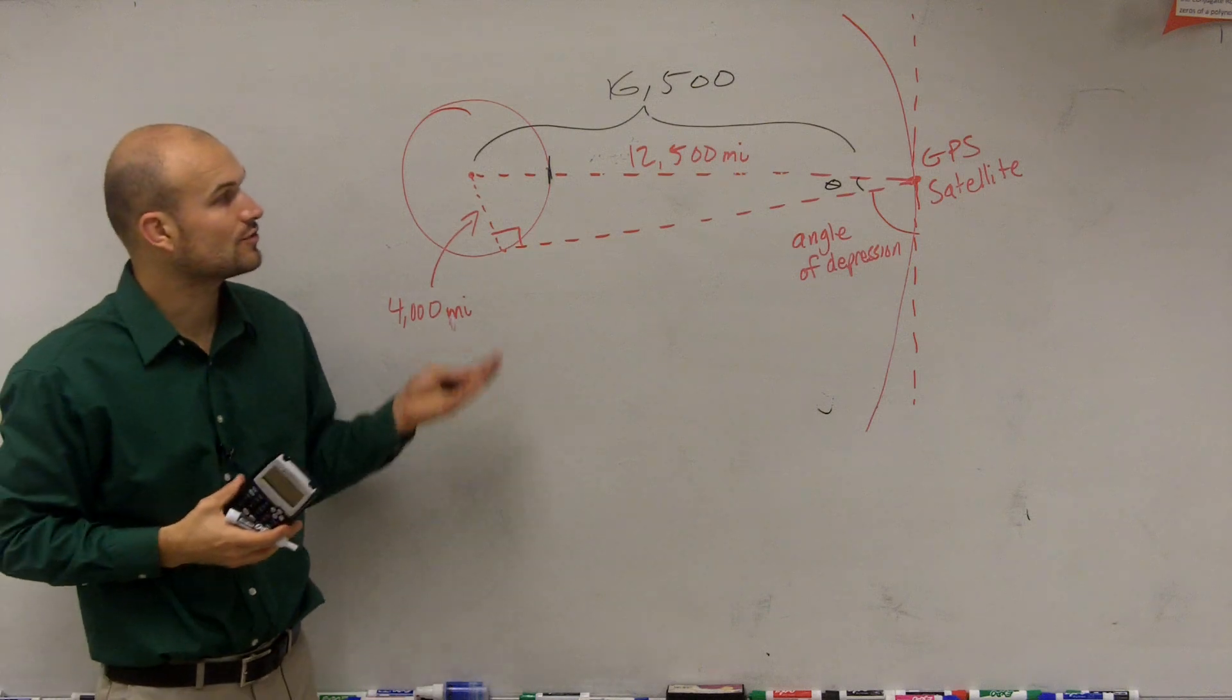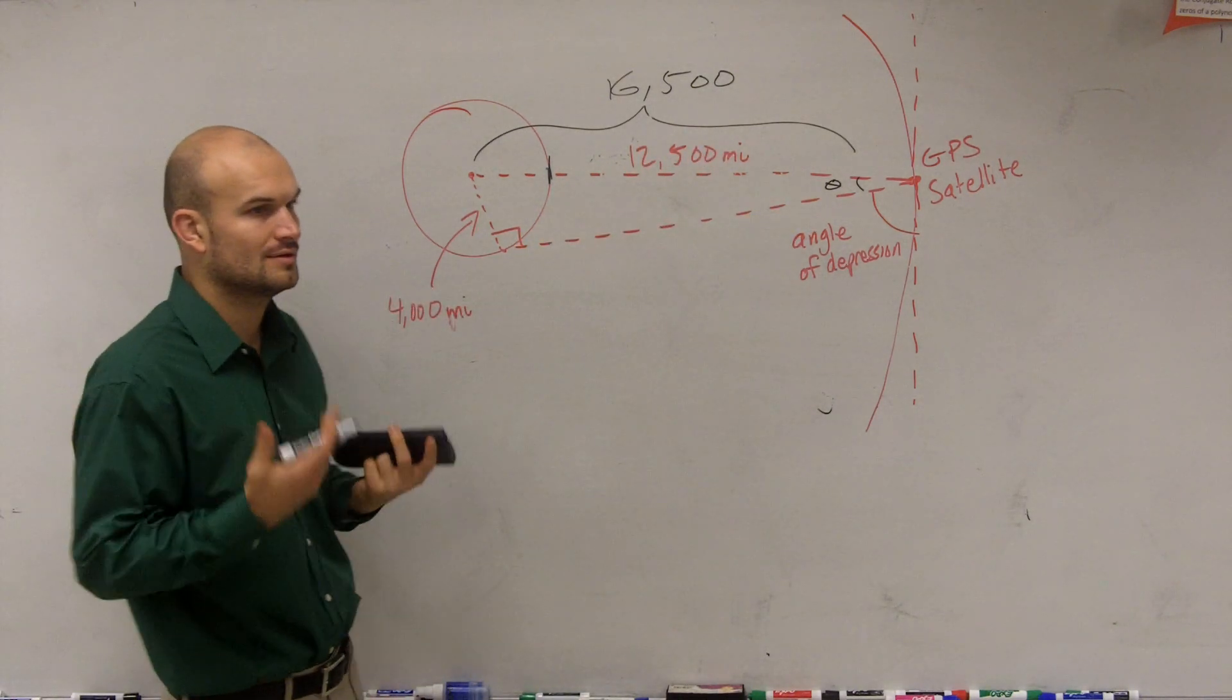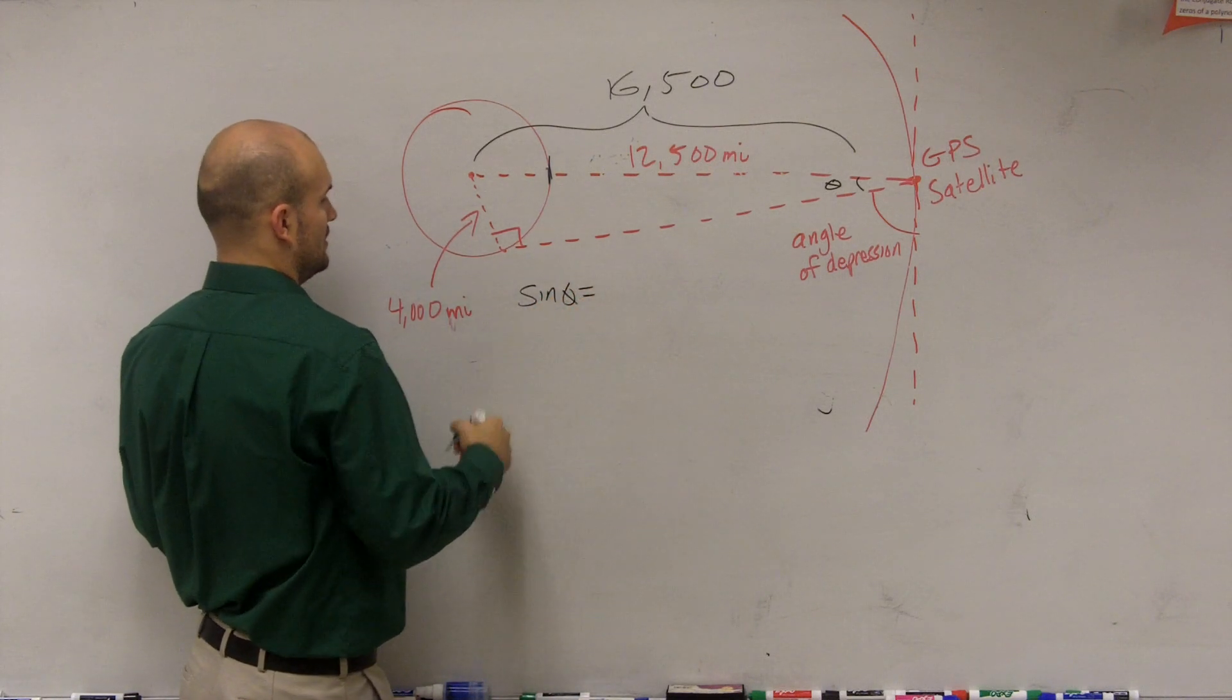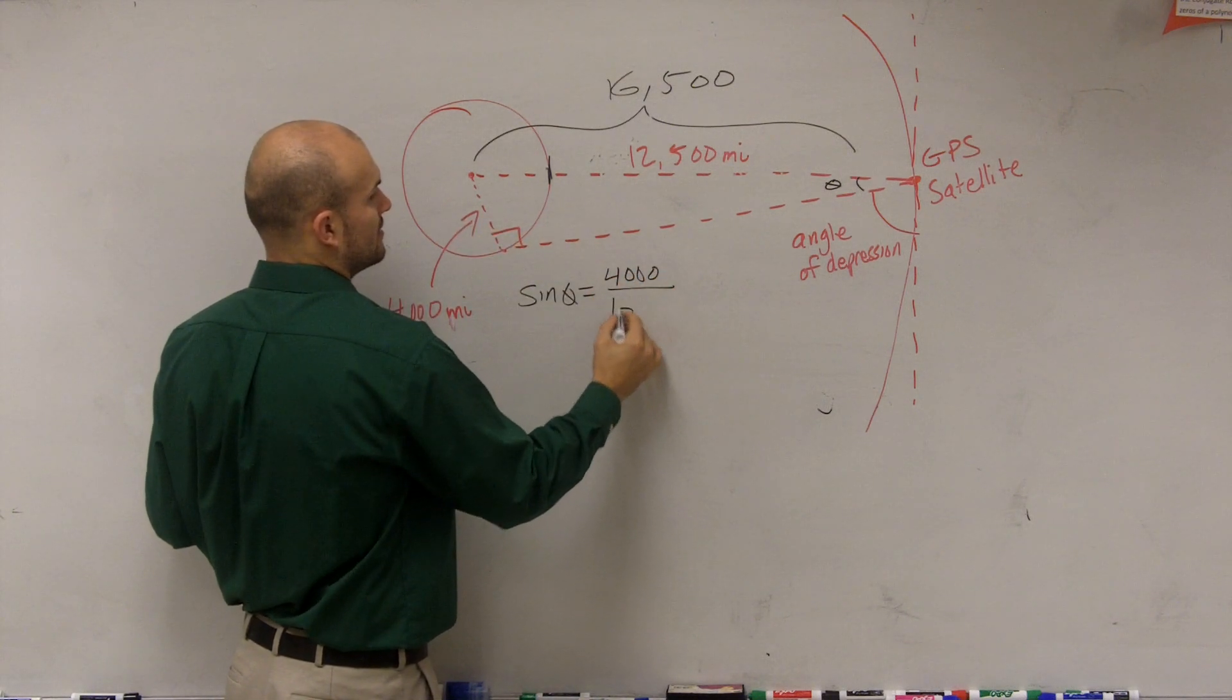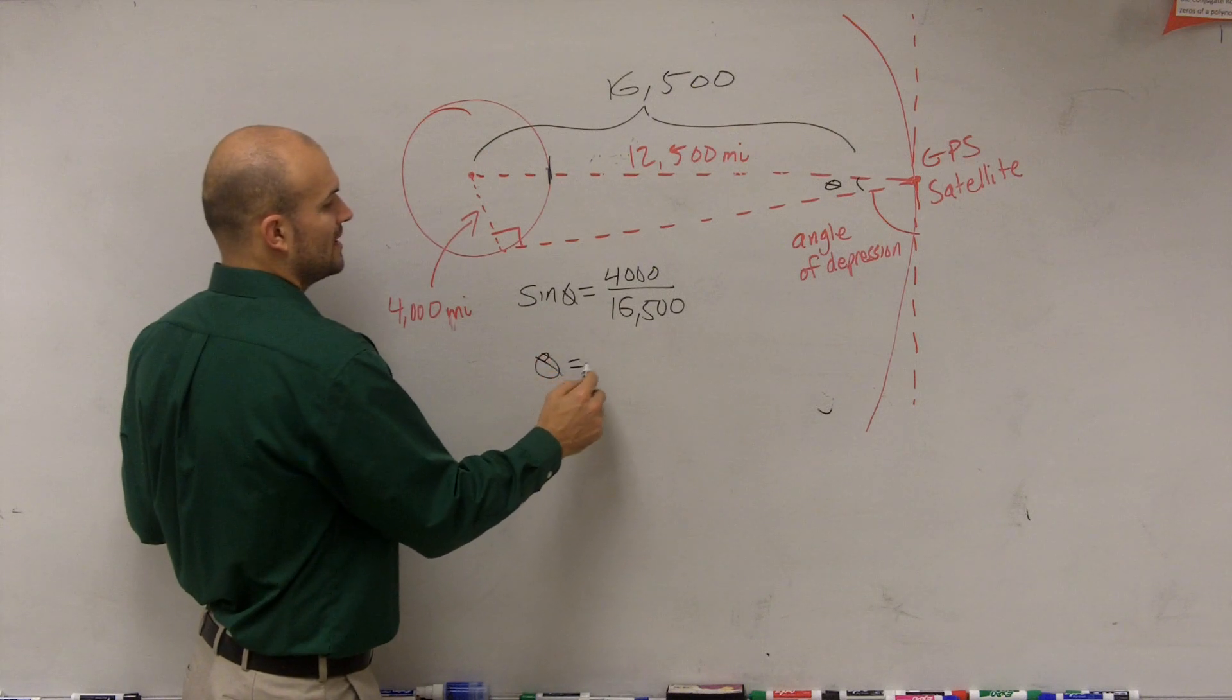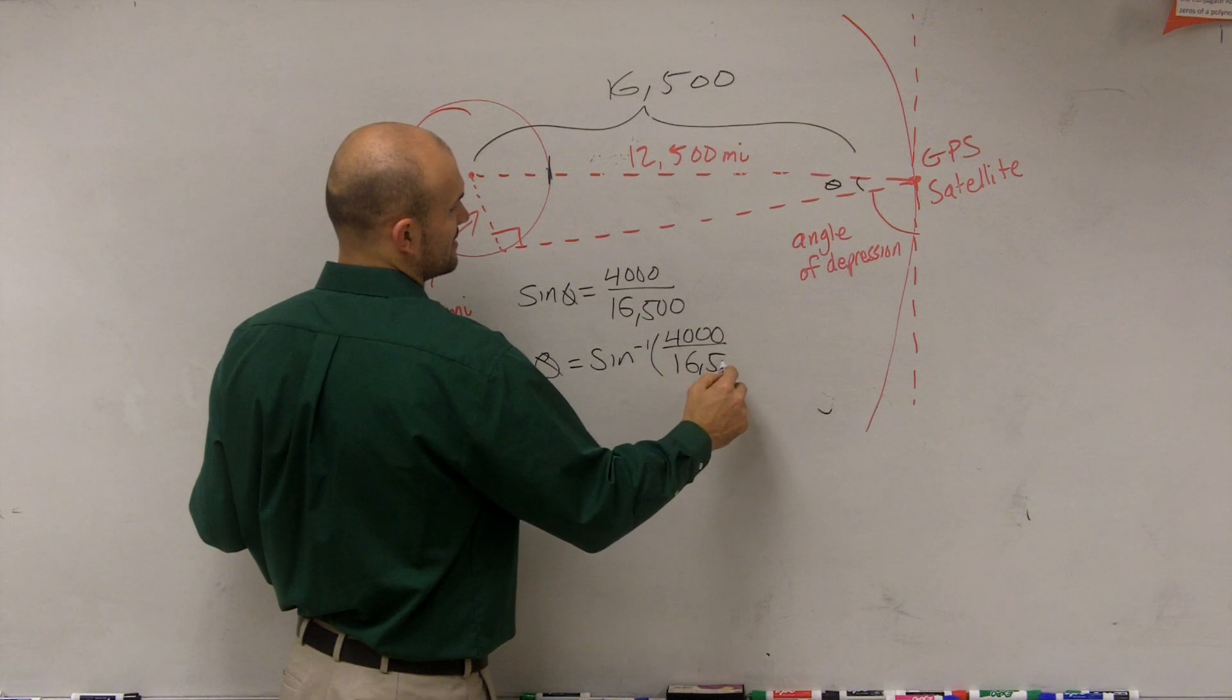Now what we need to do is create an equation to find theta. So since I have the opposite and my hypotenuse, I can use the trigonometric function of sine. So therefore, I have sine of theta equals opposite divided by hypotenuse. Therefore, by using our inverse trigonometric functions, we could say theta equals inverse sine of 4,000 divided by 16,500.